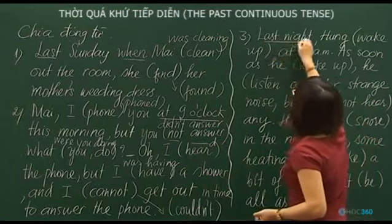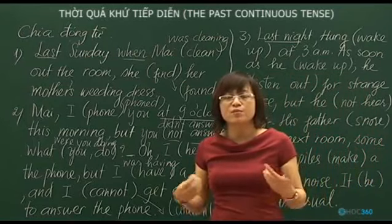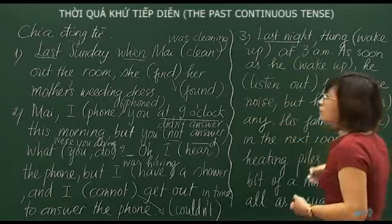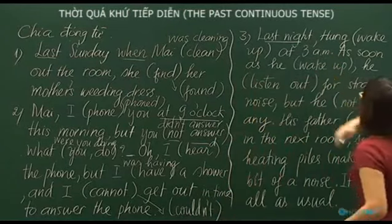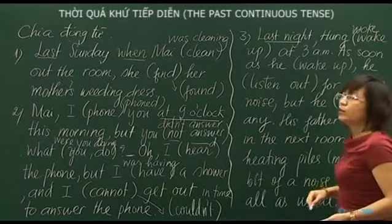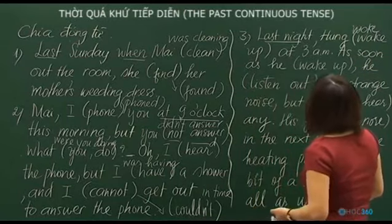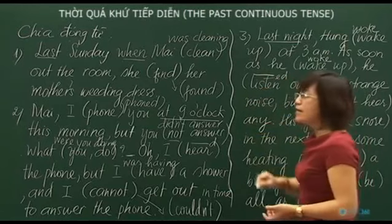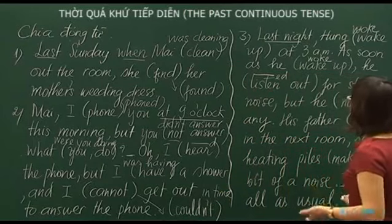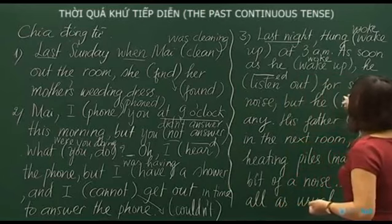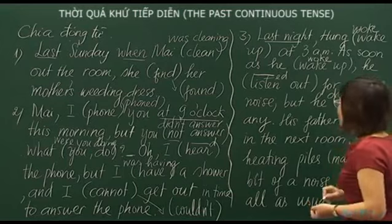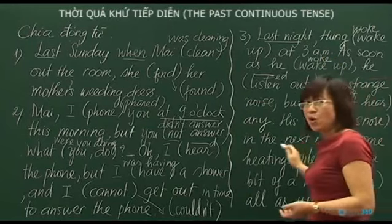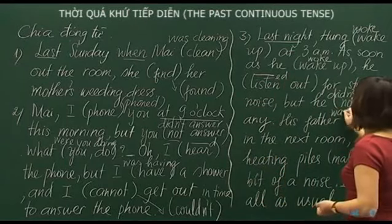Sentence 3: 'Last night' — a clear past time marker. The action of waking up is like the phone action: you open your eyes and you are awake immediately, so simple past. 'Wake' is irregular, so: 'woke up at 3am.' 'As soon as he woke up, he listened out for strange noise' — a series of short actions in the past. 'But he did not hear anything.' His father was snoring in the next room — snoring is long: 'His father was snoring.'